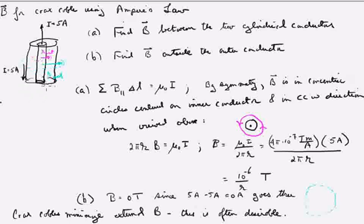So we'd like to find the B field between the two conductors, and we'd like to find the B field external to both conductors. So to do the first, to find the magnetic field between the two conductors, we're going to use Ampere's law.